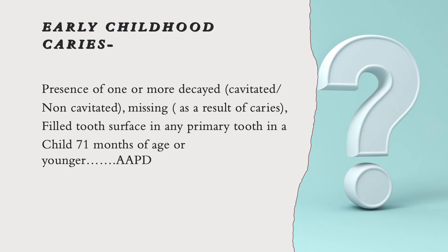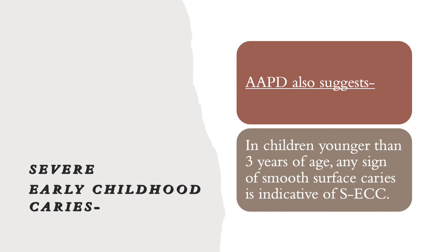To clarify, if there is at least one decayed tooth, a missing tooth due to cavities, or a filled tooth surface in any primary tooth in a child of 71 months of age or younger, that falls into early childhood caries. For severe early childhood caries, the distinguishing factor is age: when the child is three years or less, any smooth surface decay — typically seen on the front teeth, which have the largest smooth surface — is indicative of severe early childhood caries.